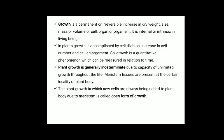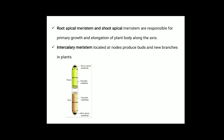The plant growth in which new cells are always being added to the plant body due to meristem is called the open form of growth. Root apical meristem and shoot apical meristem are responsible for primary growth and elongation of the plant body along the axis. Intercalary meristems are located at nodes to produce buds and new branches in plants.